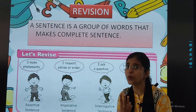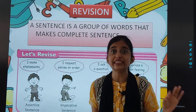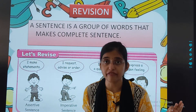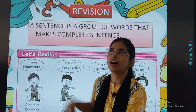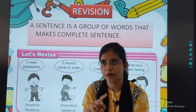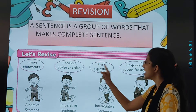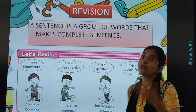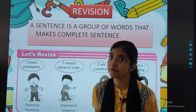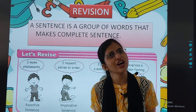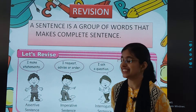The third one is the interrogative sentence, very easy to identify. At the end of this sentence a question mark comes. It asks a question. For example, 'How are you?', 'What is your name?', 'What are you doing?' — all these are interrogative sentences.